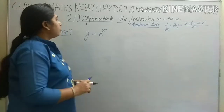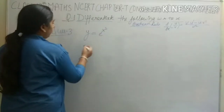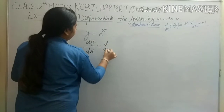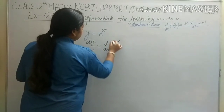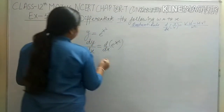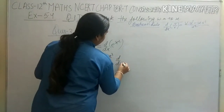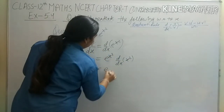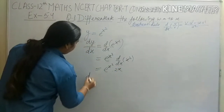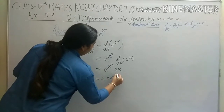Question number 3: y equals e raised to power x squared. Differentiate with respect to x. We will get dy/dx equals differentiation of e raised to power x². Differentiating it: e^(x²) as it is, and now we will differentiate x², which gives 2x. So dy/dx equals 2x e raised to power x².